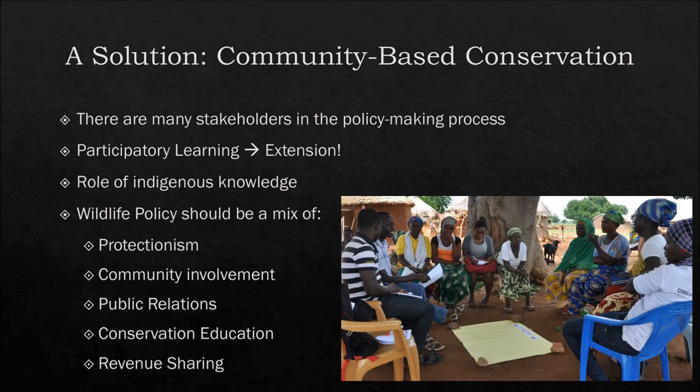A solution in regards to policy is community-based conservation. There are many stakeholders involved in the policy-making process, and community-based conservation highlights participatory learning, or extension — where local farmers and community members work alongside scientists, researchers, and policy-makers. Everybody gives their input, and in this process things aren't one-sided or closed off — everybody's working together.